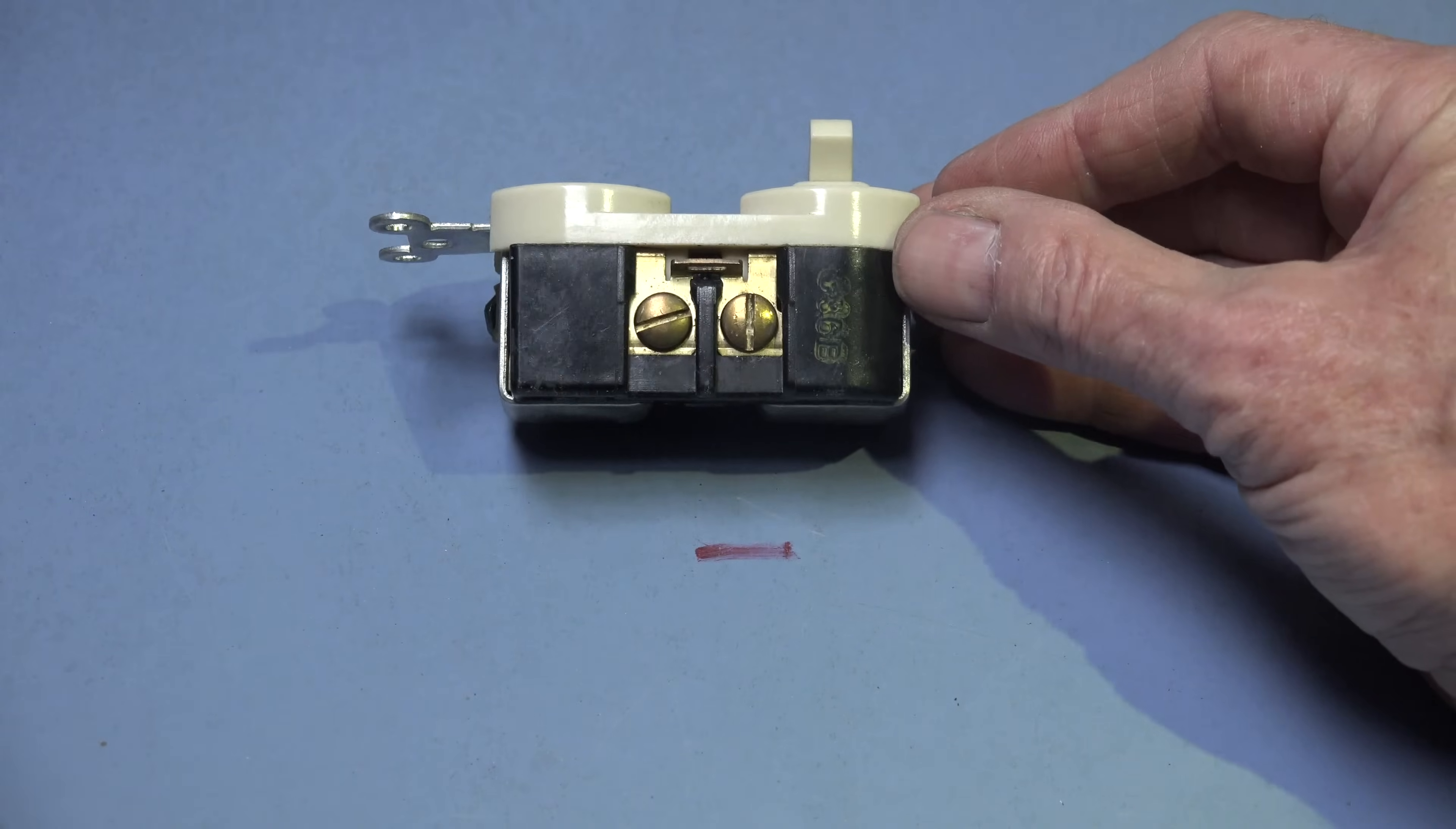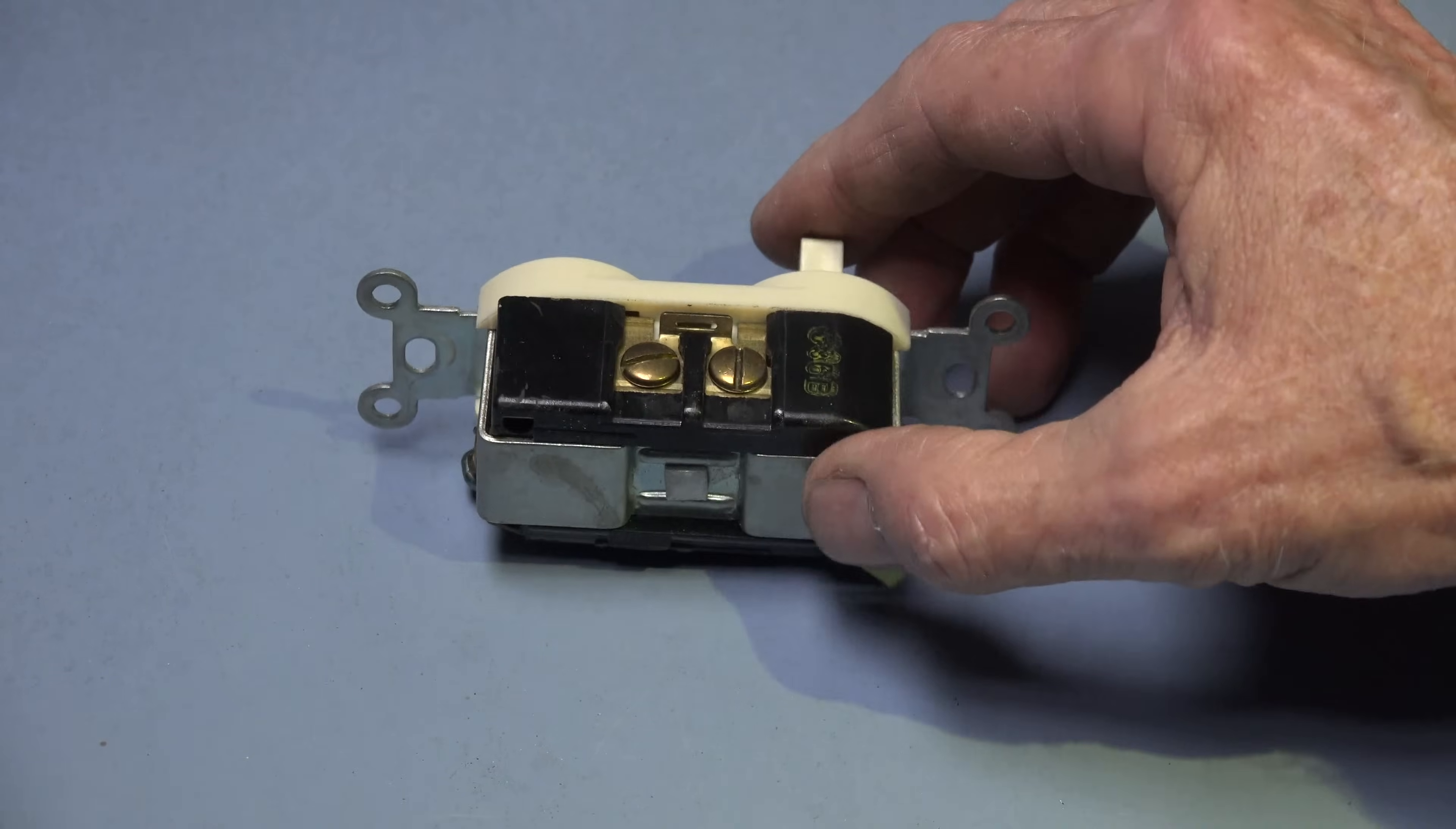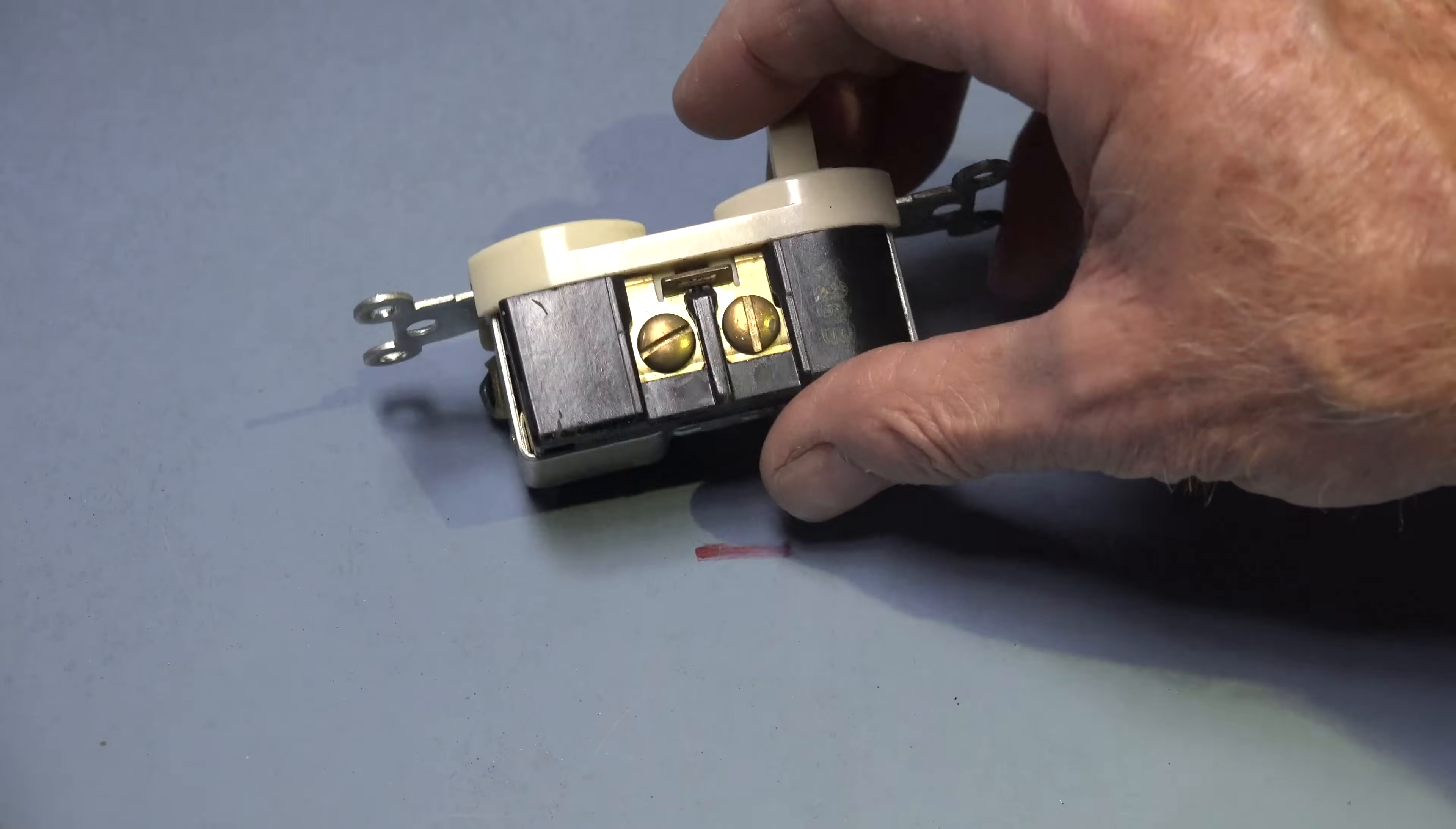On the other side it's a little different. Both of these are hot leads. The difference between these two is I can take this little bar here and break it off if I want to separate. But let's look at how this would be wired up.